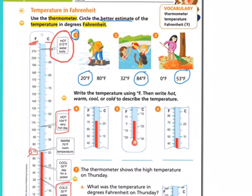Now for numbers four, five, and six, we are going to write the temperature using the degrees symbol and Fahrenheit, and then we're going to describe the temperature as either hot, warm, cool, or cold. So if I look at that temperature on that thermometer, I would say that looks like about 72 degrees, and that's considered warm. It's not quite hot.